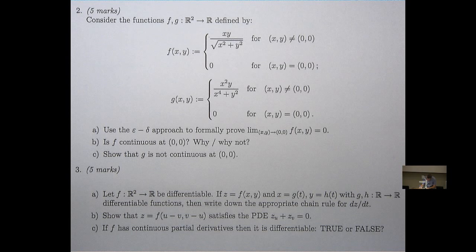Let f be differentiable, function of two variables, x and y be functions of t, with g and h differentiable. Write down the appropriate chain rule for dz/dt.